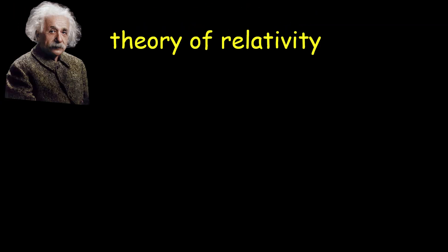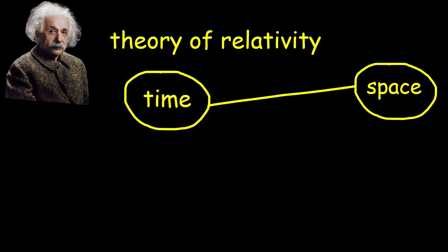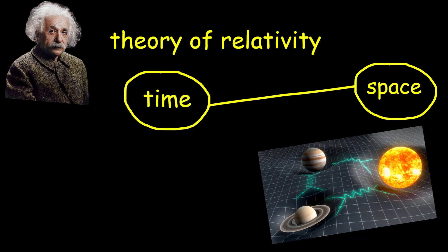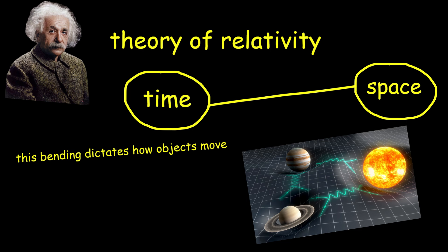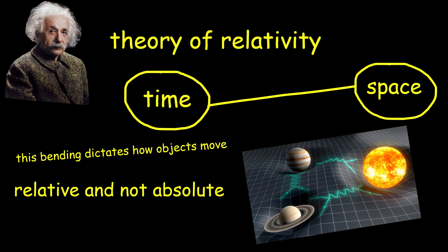In essence, Einstein's theory of relativity tells us that space and time are interconnected and flexible. Massive objects bend space-time, and this bending dictates how objects move, which we perceive as gravity. The theory challenges our intuitive notions of time and space, showing that they are relative and not absolute.